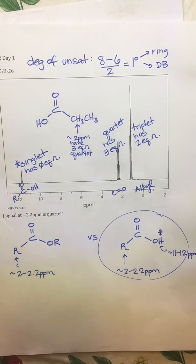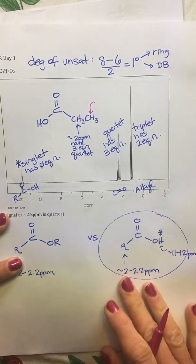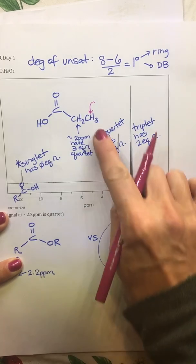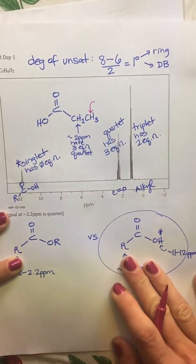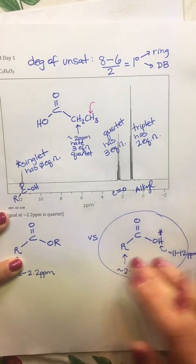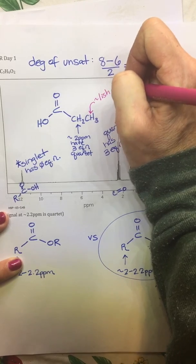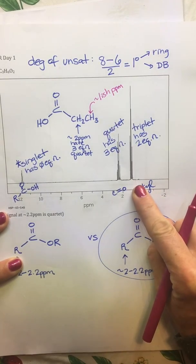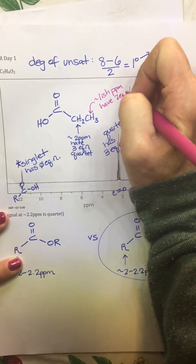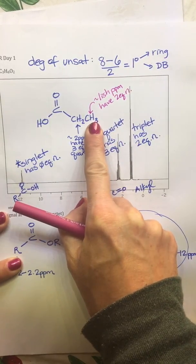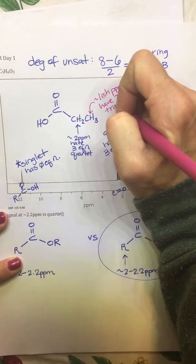Which corresponds to that quartet that we are indeed seeing right here. So that matches, we're checking our work right now, which is kind of nice. And then finally, if we look at these guys right here and double checking them, they are the furthest away from our electronegative oxygens and the carboxylic acid, and they should again be in that one-ish region, which we do have a signal in that one-ish region.